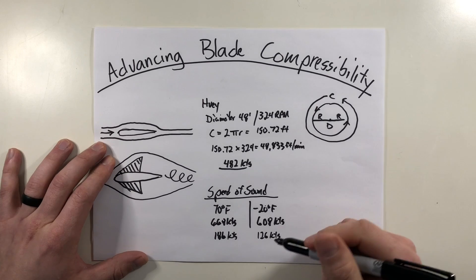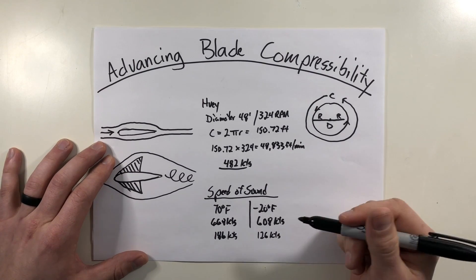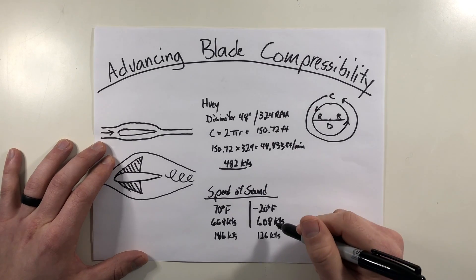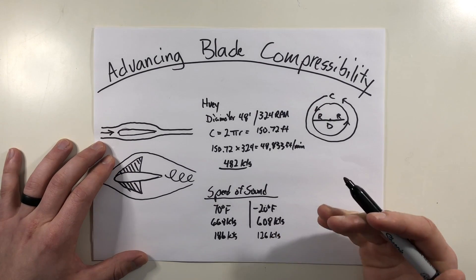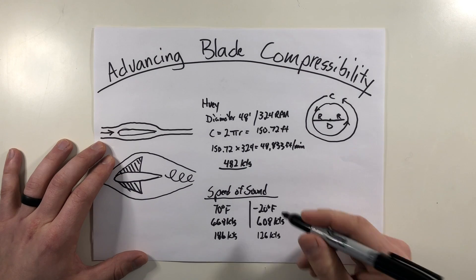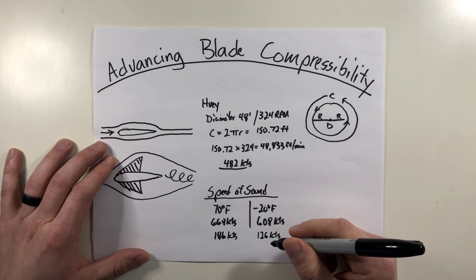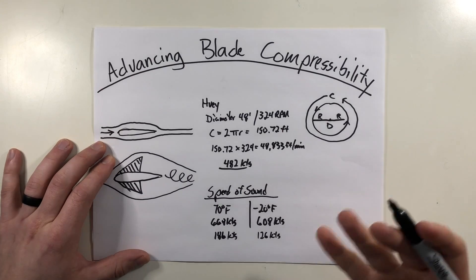the kicker is that if you remember from previous videos, the airflow accelerates over an airfoil. This means that your blade doesn't have to actually break the speed of sound in order for the airflow to break the speed of sound. So it's believed that the airflow can accelerate as much as 10% over the airfoil, meaning compressibility effects can take place much sooner.